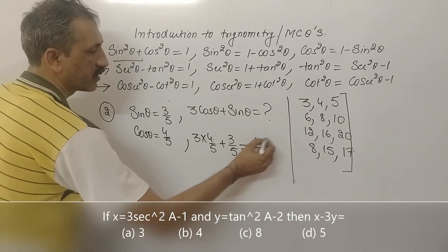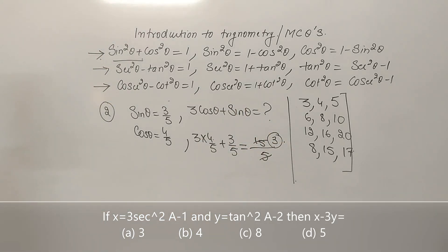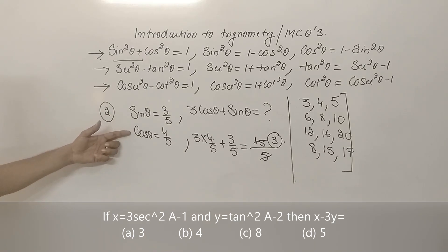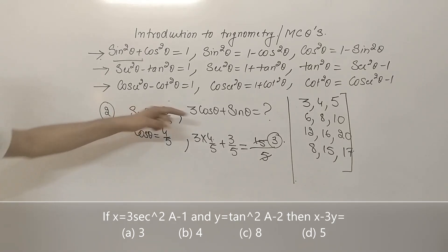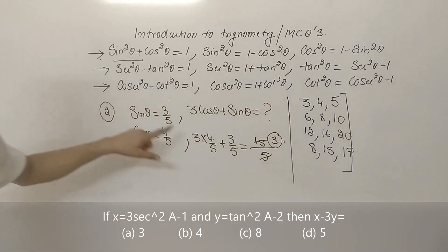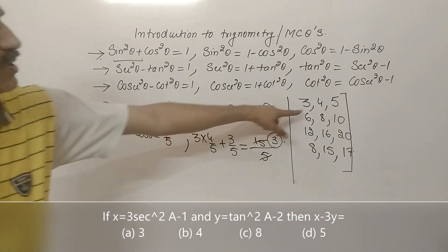The LCM is 5. So substituting: 3 cos theta plus sin theta equals 3 times 4 by 5 plus 3 by 5 equals 12 by 5 plus 3 by 5 equals 15 by 5, which equals 3. You use the right-angle triangle and apply the Pythagorean triplet to solve it quickly.